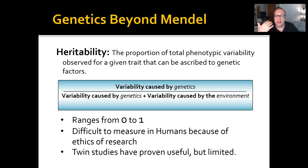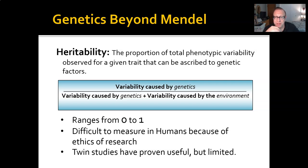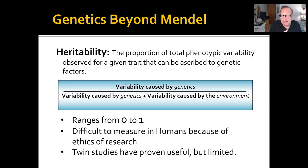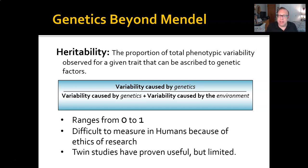Twin studies are useful but have limitations. Number one: ethics. Deliberately separating children at birth is unethical, so we usually have to find twins who were given up for adoption. We also can't control the environments they're raised in very well — that would be unethical too. There are limitations to twin studies, but they are useful when we can use them.